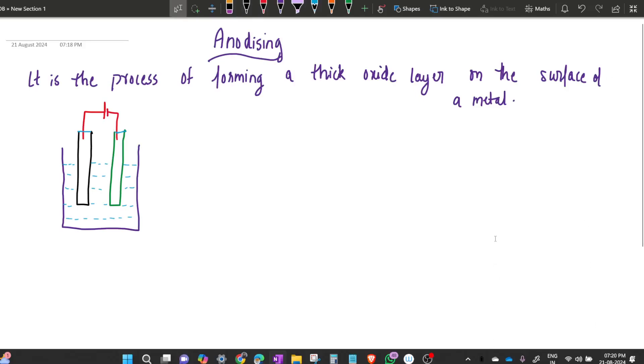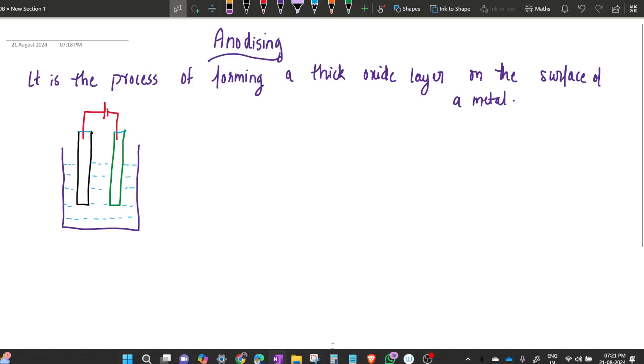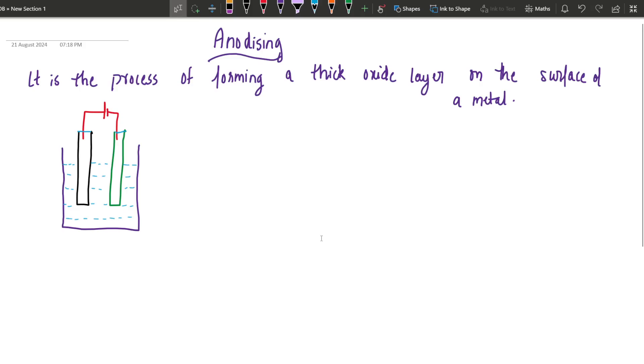So in this video I'm going to talk about anodizing. What is anodizing? It is a process of forming a thick oxide layer on the surface of a metal.